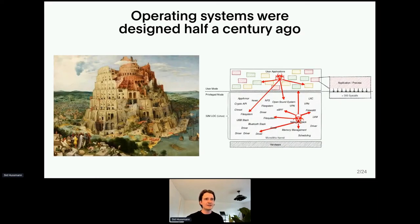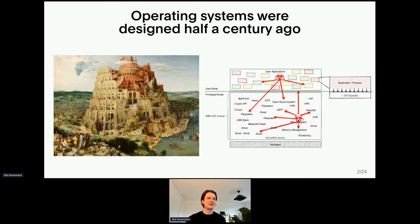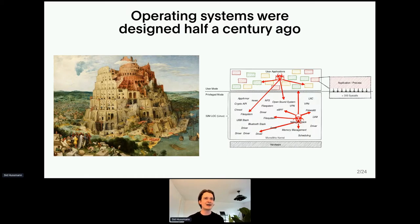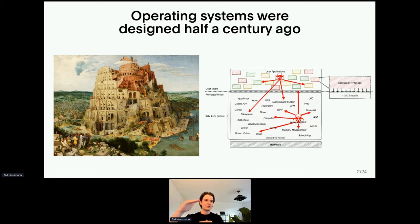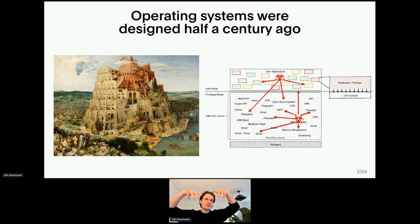Before I get started, let me just really roughly tell you how computers work. The design of current operating systems is over half a century old. In many aspects, it really feels like the Tower of Babel — an analogy I borrowed from a presentation Justin Cormack gave a couple of years ago. At the bottom, we have the hardware. In the middle, we have a kernel that abstracts the hardware. And on top, we have applications that can access these abstractions with system calls.